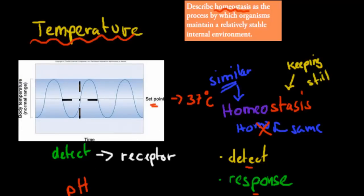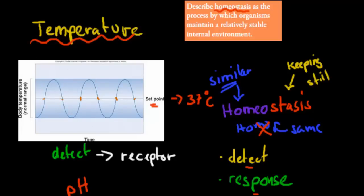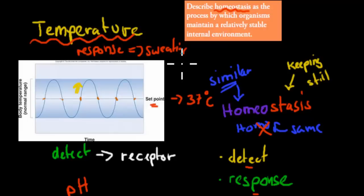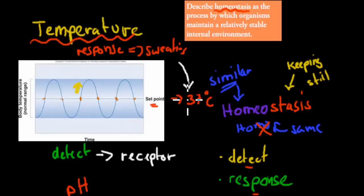If temperature is at the set point, that's perfect — that's where we want to keep it. But often it'll go either too low or too high. So if body temperature goes too high, a response will happen: the receptor has detected the change, and then the response happens. For example, if it's too high, the response could be sweating, which will help us bring it back down to 37 degrees Celsius.